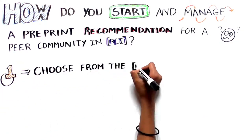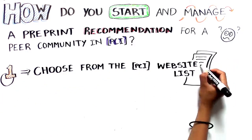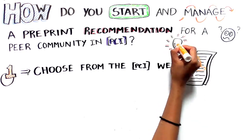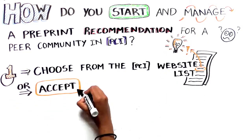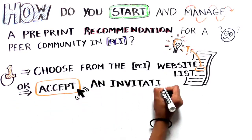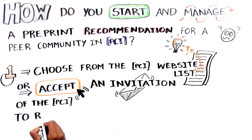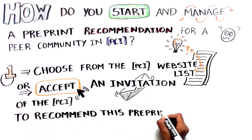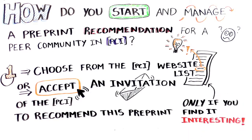Step 1: Start the recommendation of a preprint by choosing a preprint from the list provided on the PCI website, or accepting an invitation from the PCI to recommend a preprint. In any case, initiate the recommendation process if and only if you find this preprint particularly interesting.